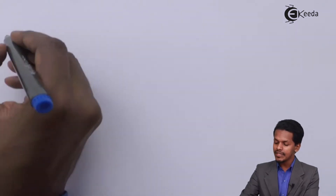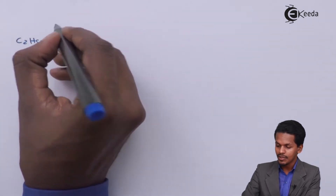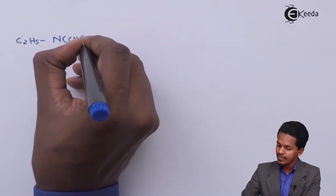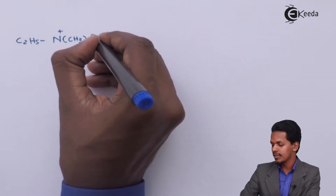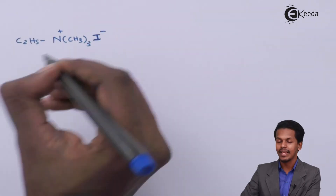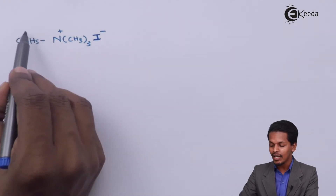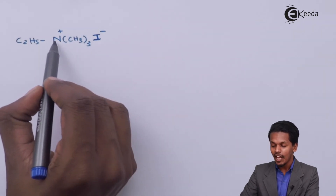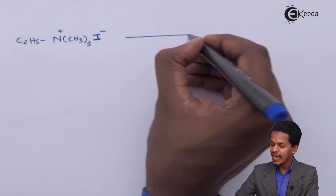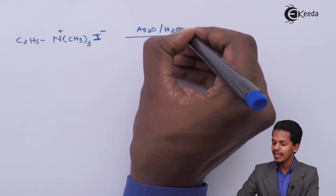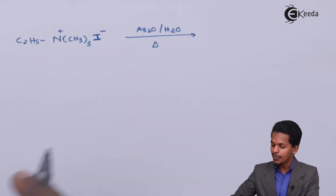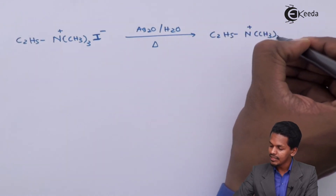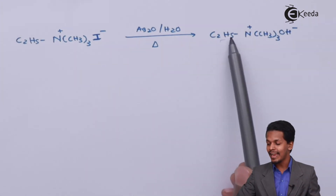For a specific example, consider C₂H₅ attached to nitrogen, along with three CH₃ groups and iodine as the halogen. This compound is ethyl trimethyl ammonium iodide. When reacted with moist silver oxide, which produces AgOH, the product obtained is C₂H₅–N⁺(CH₃)₃ OH⁻, known as ethyl trimethyl ammonium hydroxide.